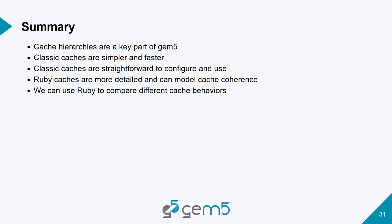In summary, cache hierarchies are a key part of gem5. Classic caches are more straightforward and faster to simulate than Ruby, but less full-featured. Ruby caches are much more detailed and can model any coherence protocol you need — if you care about coherence behaviors and don't need high bandwidth, Ruby is what you should use; otherwise classic caches may suffice.